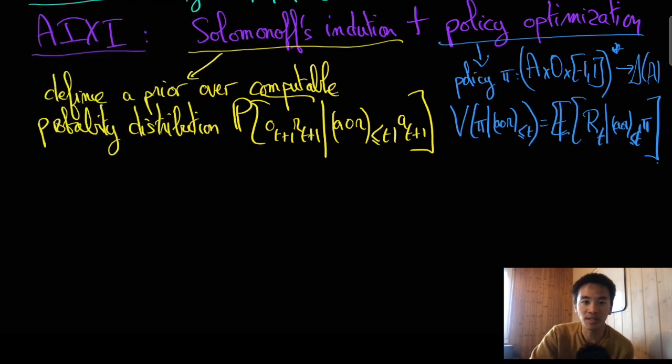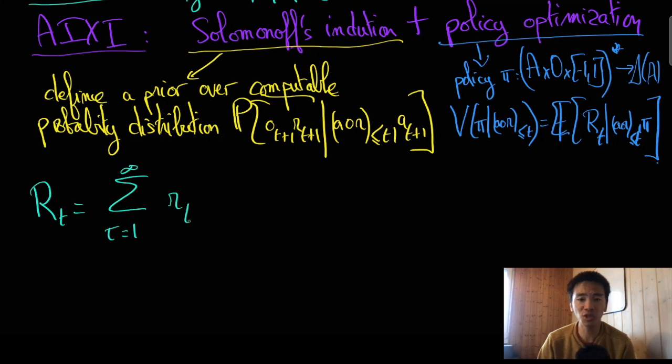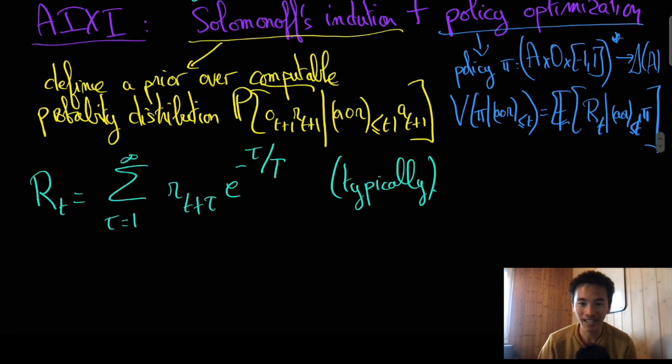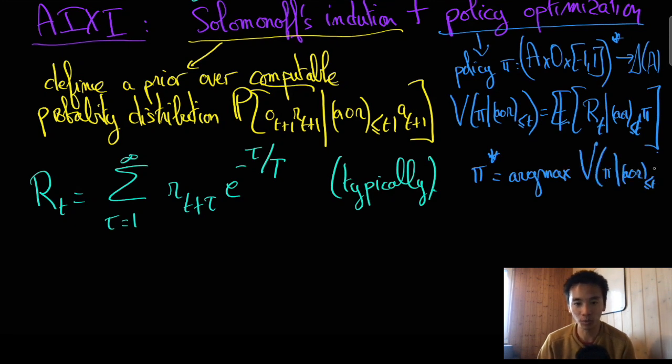Actually, for the so-called value of policy pi to be well defined, we need to make sure that it won't take infinite values. This is typically achieved by considering the sum of the discounted expected rewards, which intuitively corresponds to assigning an exponentially decreasing value to rewards that will be obtained far in the future. AIXI then simply optimizes the policy pi and thereby selects the policy that has the largest value given Solomonoff's induction.